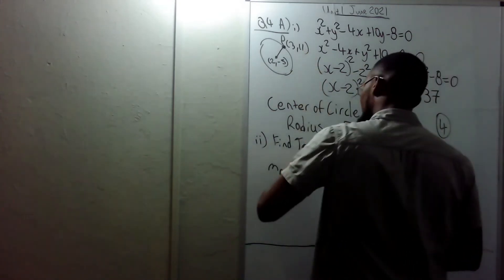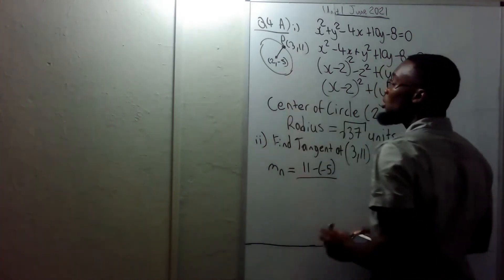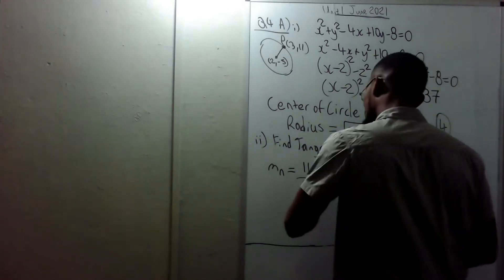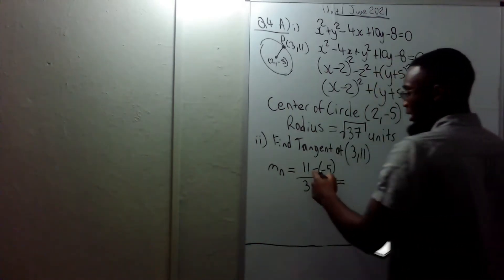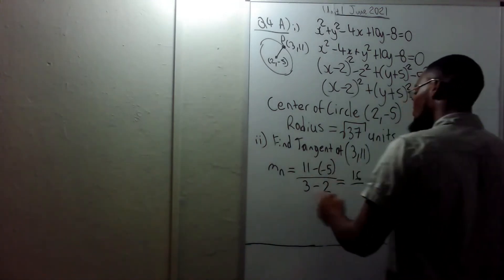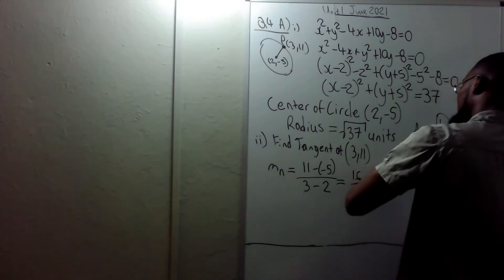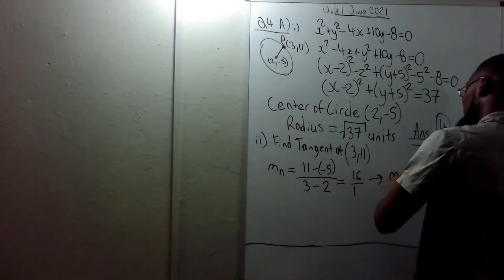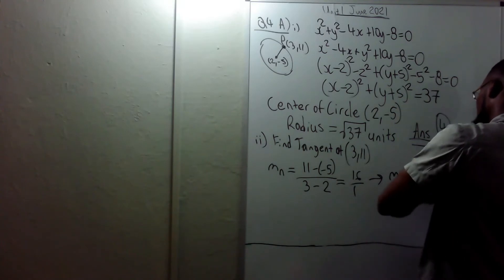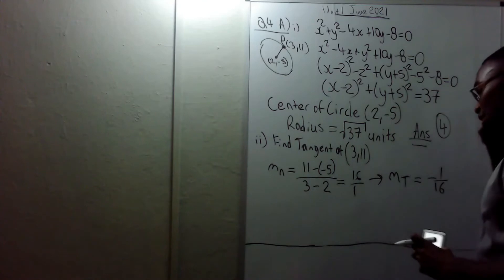That's (11 minus −5) over (3 minus 2), which is 16 over 1, so the gradient of the normal is 16. This implies that the gradient of the tangent is equal to negative 1 over 16, since the tangent is perpendicular to the normal.